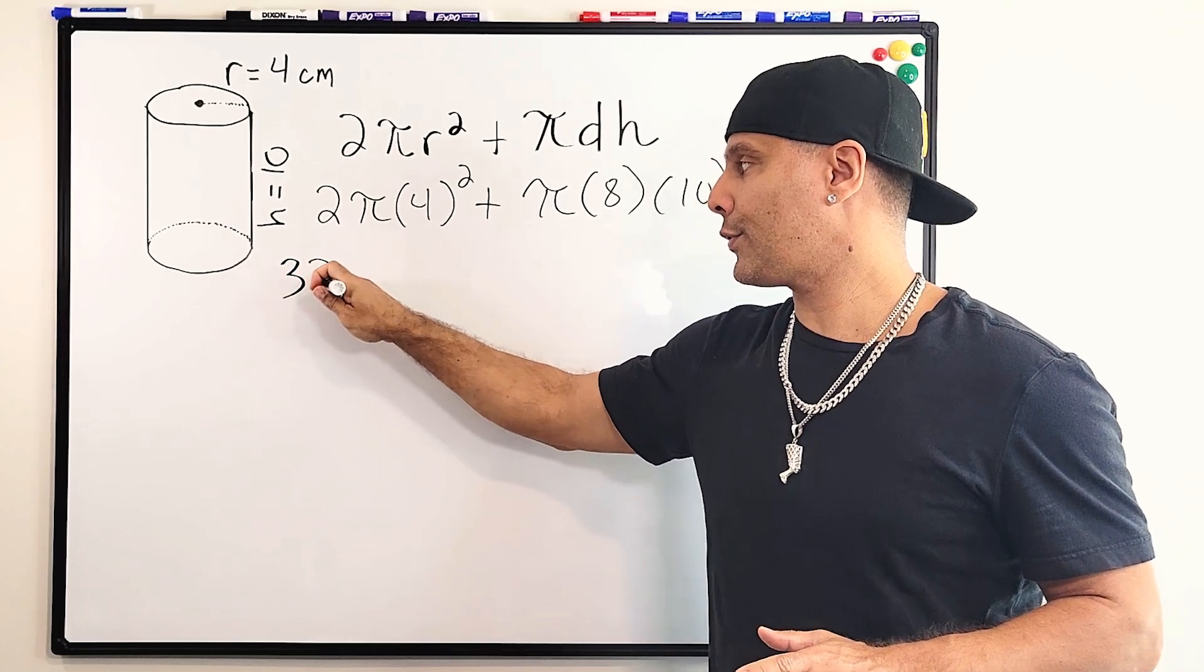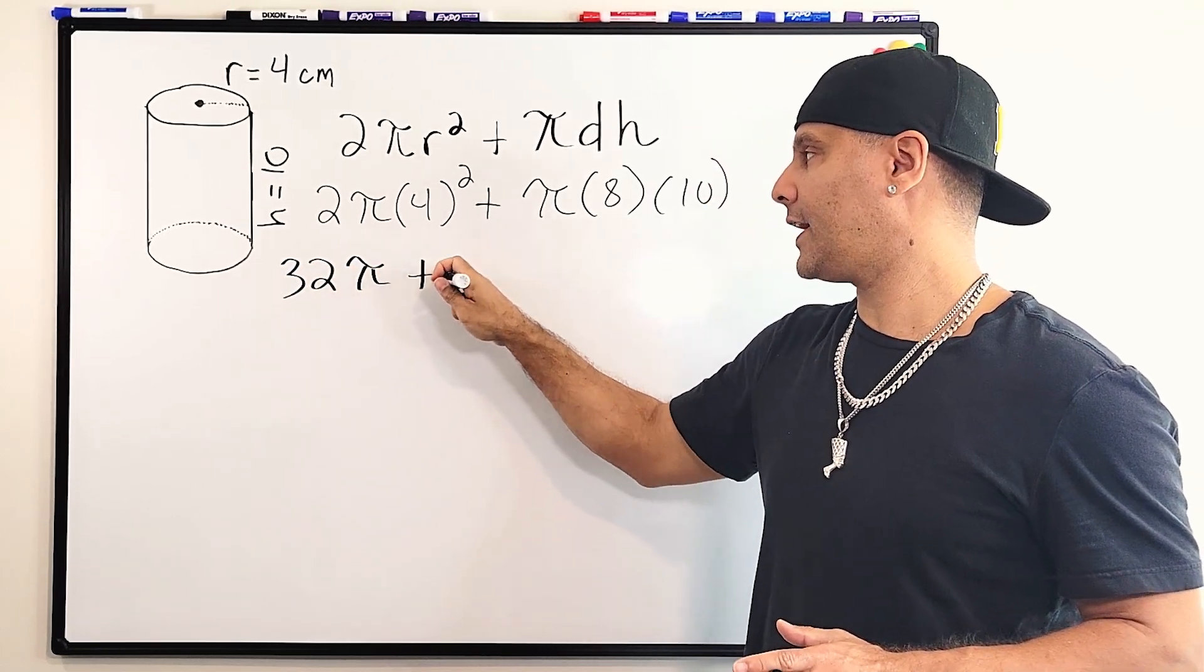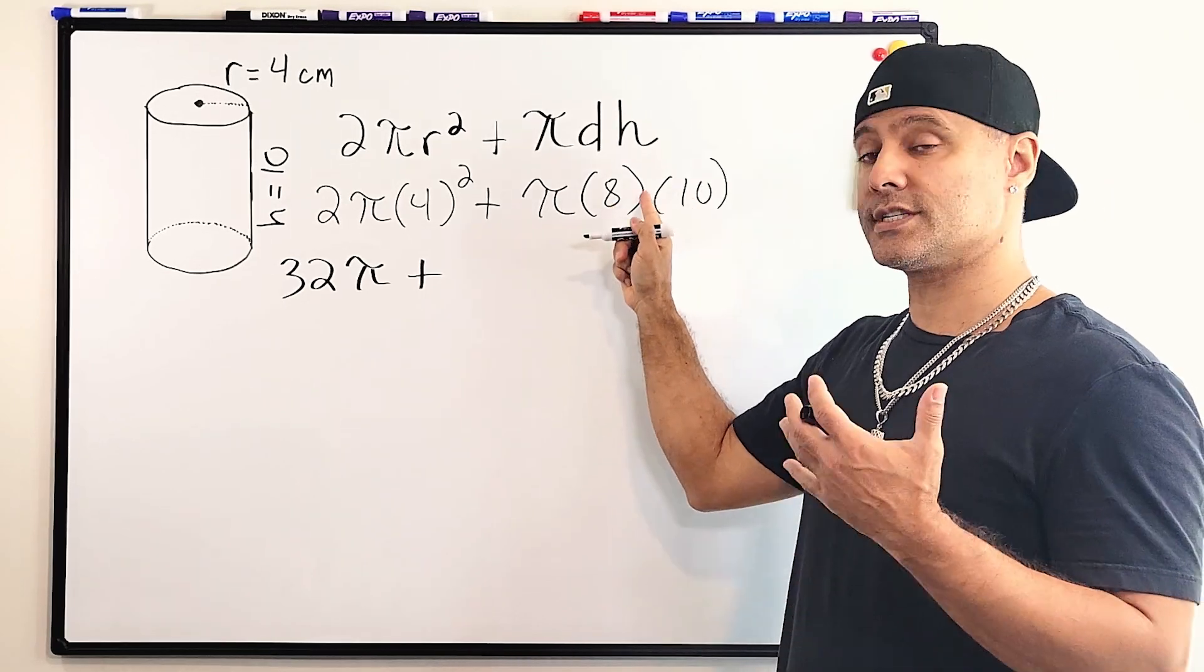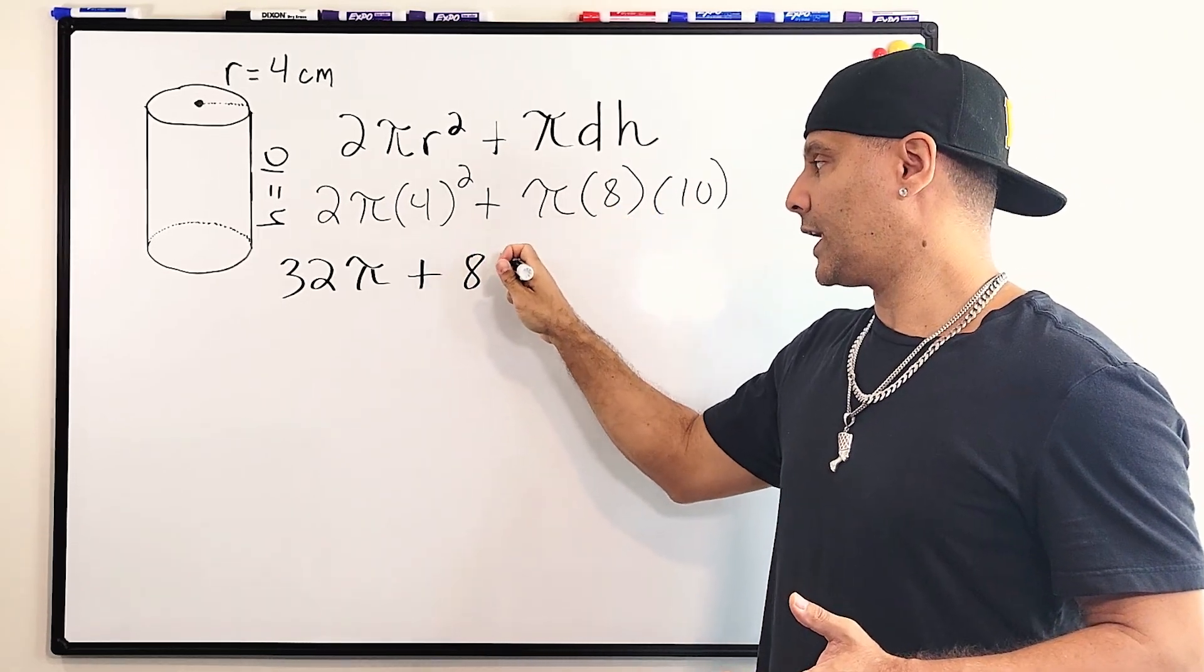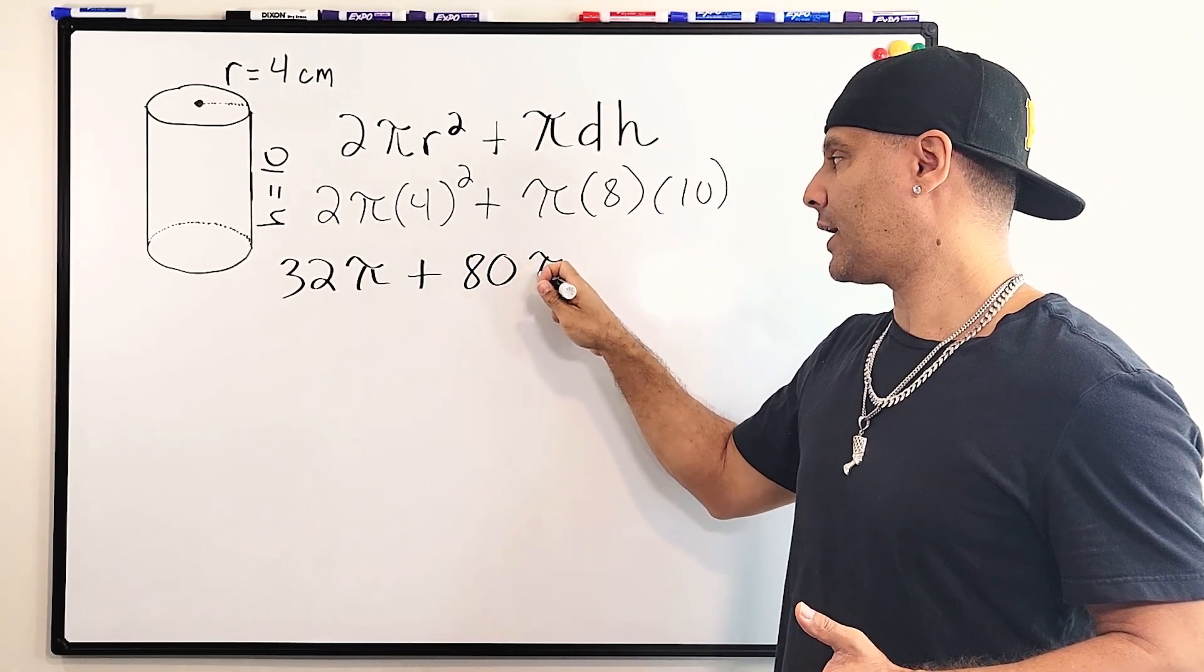We're going to write 32 multiplied by π. And we're going to add that to 8 times 10, which is 80. So we're going to add that to 80π.